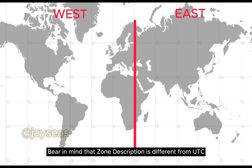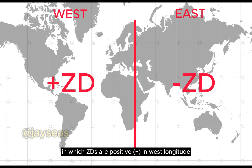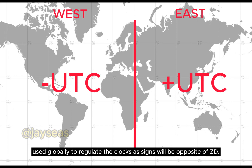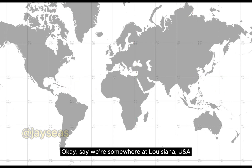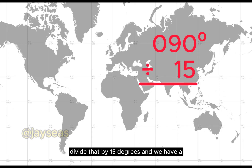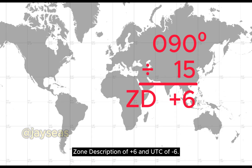Bear in mind that the zone description (ZD) is different from UTC. ZDs are positive in west longitude and negative in east longitude, while UTC signs are opposite to ZD. For example, at Louisiana, USA, which is around 090 degrees west longitude, divide that by 15 degrees and we have a zone description of plus 6 and UTC of minus 6.